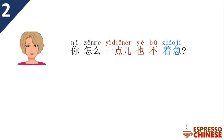你怎么一点也不着急? 怎么 can mean 'how' or 'how come.' In this case it's 'how come' — why. So, how come 你一点也不着急? 一点也不 means 'not at all.' 着急 means 'anxious.' So: how come you're not anxious at all? Note that you can also say 一点都不 with an adjective — both 一点也不 and 一点都不 are okay and mean 'not at all.'